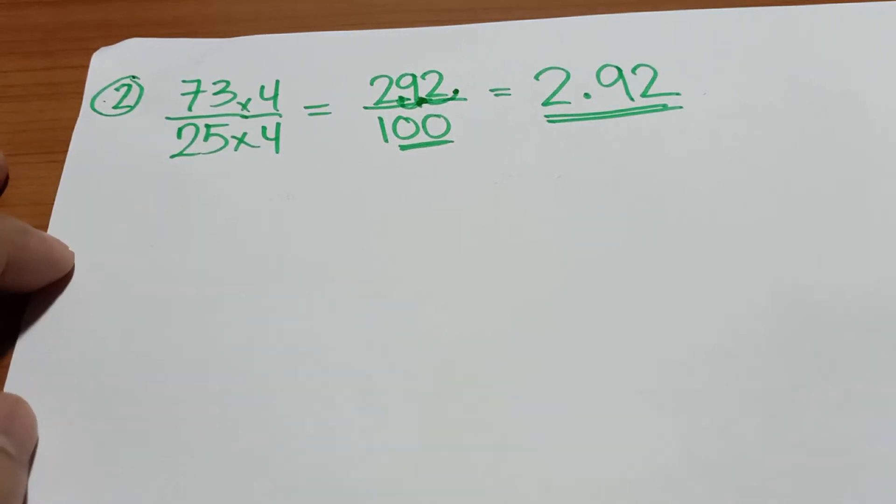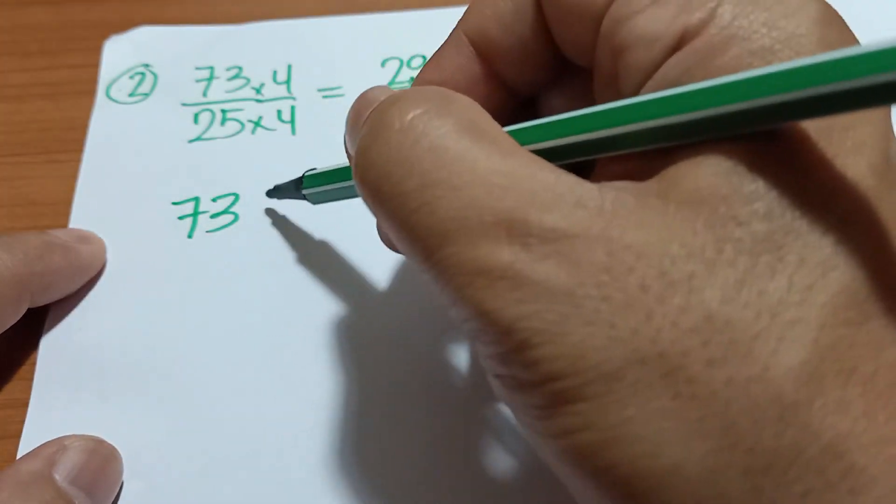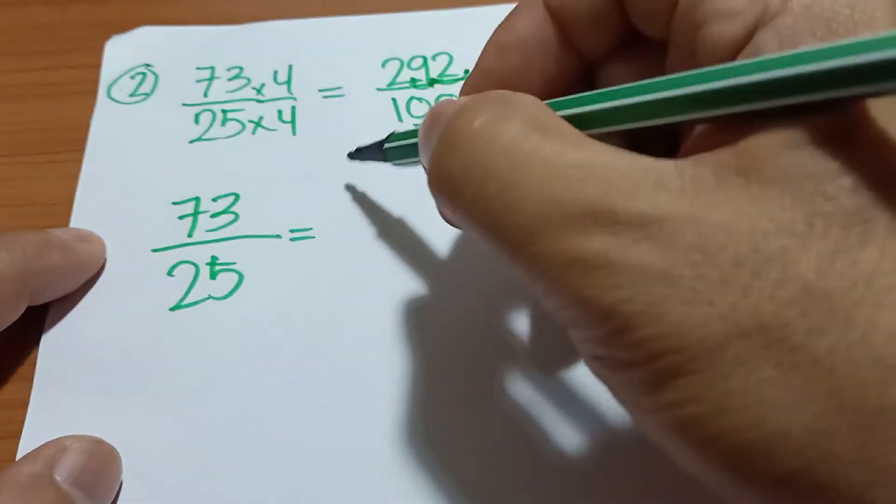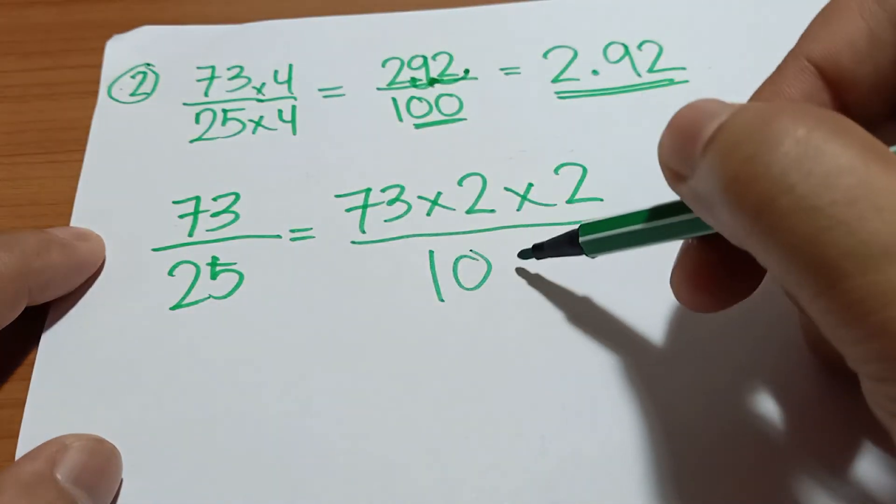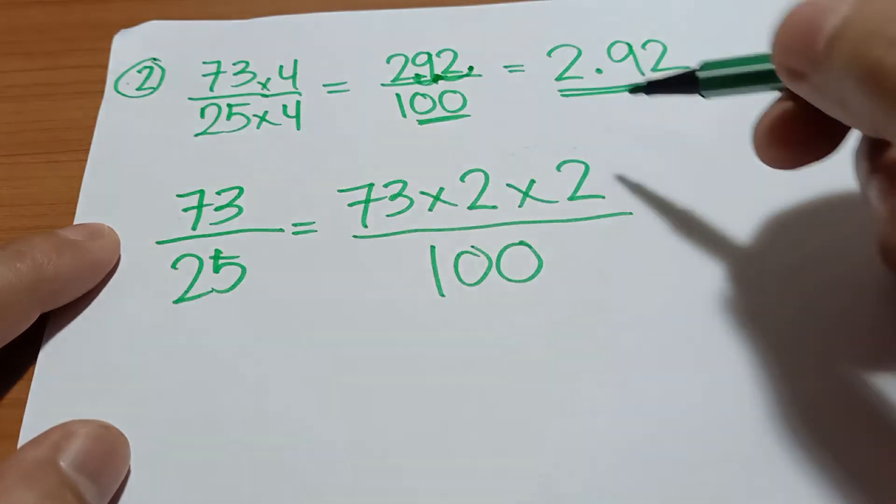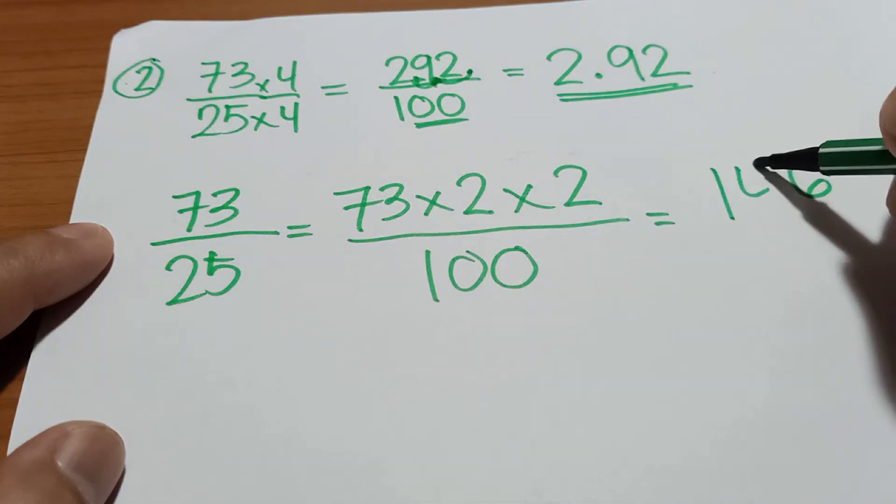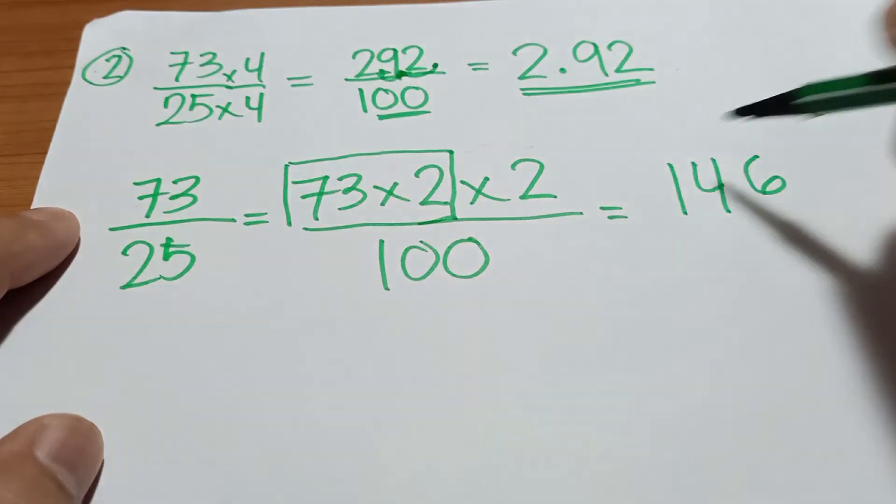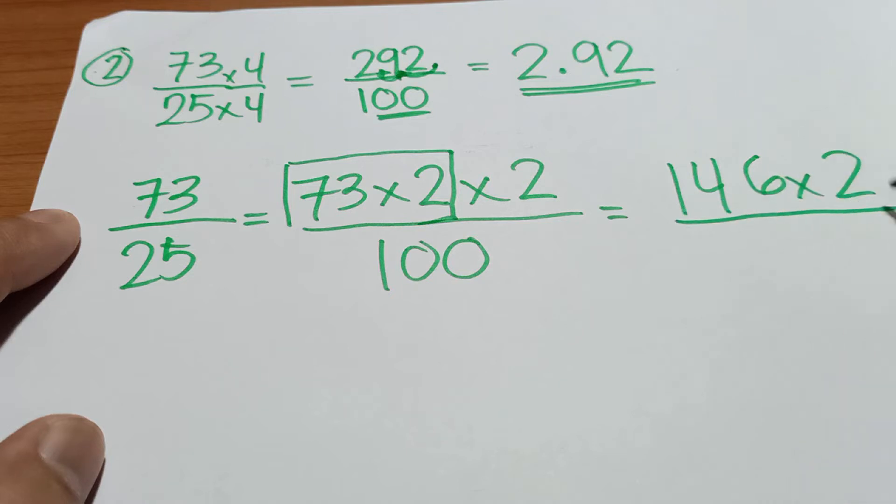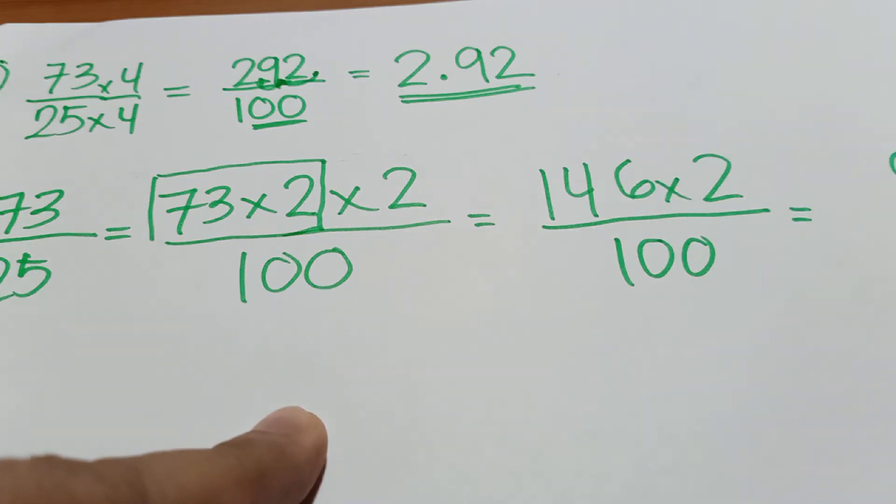Or if you have difficulty in multiplying such a little bit big number, you can do this way. So 73 over 25, you just multiply it by 73 times 2 times 2 over 100. So 73 times 2 times 2 is, that is 6 and then 14, so for this part. And then the remaining 2 is just multiply again by 2, over 100. So that means is 2, 9 and 2, over 100.